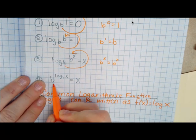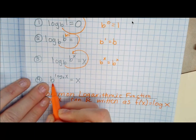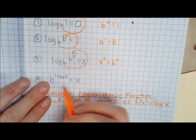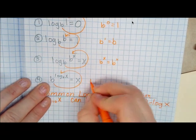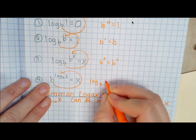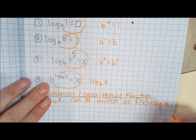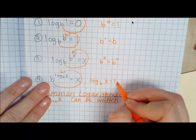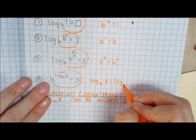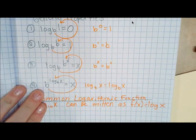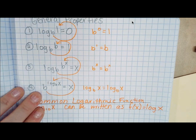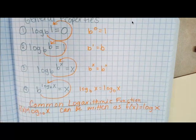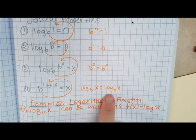Our last property is converting exponential to log: B to the log base B of X equals X. So these properties are pretty simple to verify just by converting between exponential and logarithmic form.